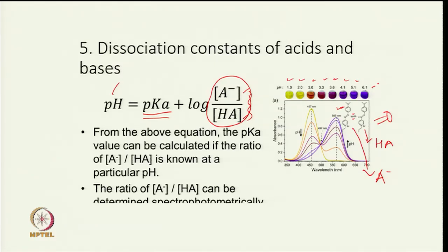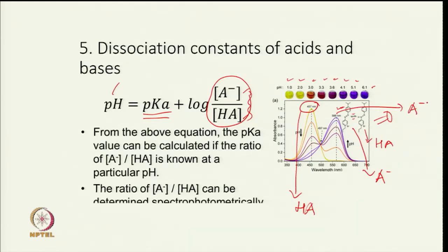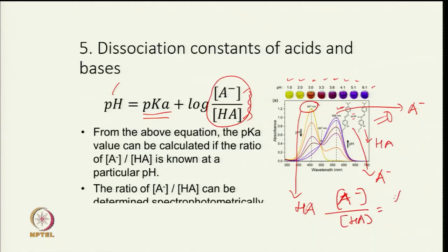As pH increases, the peak at 457 nm goes down and the peak at 566 nm goes up. The 457 nm peak corresponds to the HA form, whereas 566 nm corresponds to the A⁻ form. By measuring absorbance at both wavelengths, we can get the ratio of A⁻ to HA.